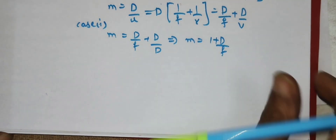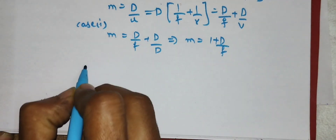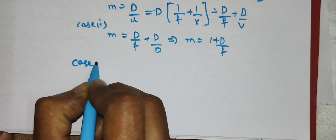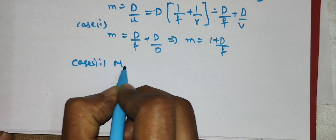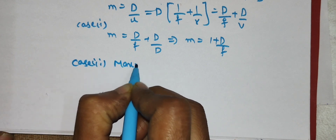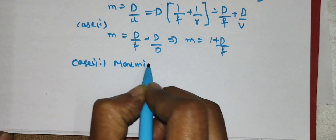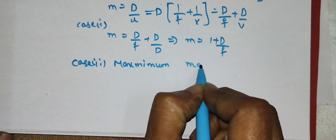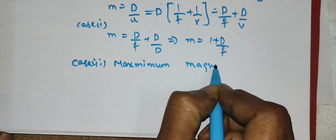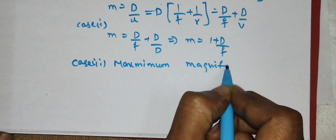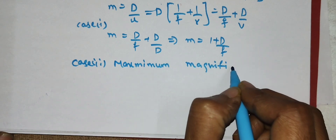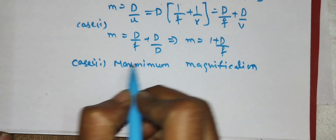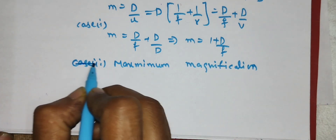If the image is formed at the far point, we take V = infinity. This is called normal adjustment. We use the maximum magnification equation 1 + D/F and substitute the values using M = D/F + D/V.